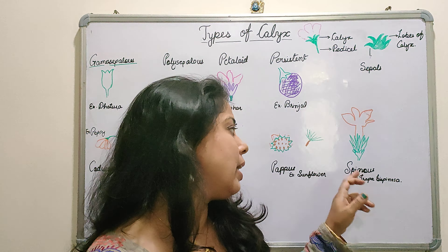Next is Hooded calyx. In this condition, one of the sepals forms a hood-like structure, similar to the hood on the back of a sweatshirt or jacket worn in winter. One sepal forms this hood-type structure, and that is why this condition is called hooded calyx. This can be seen in Aconitum.